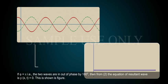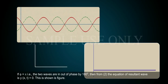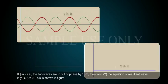If φ = π, that is, the two waves are out of phase by 180 degrees, then from Equation 2, the equation of the resultant wave is y(x,t) = 0. This is shown in the figure.